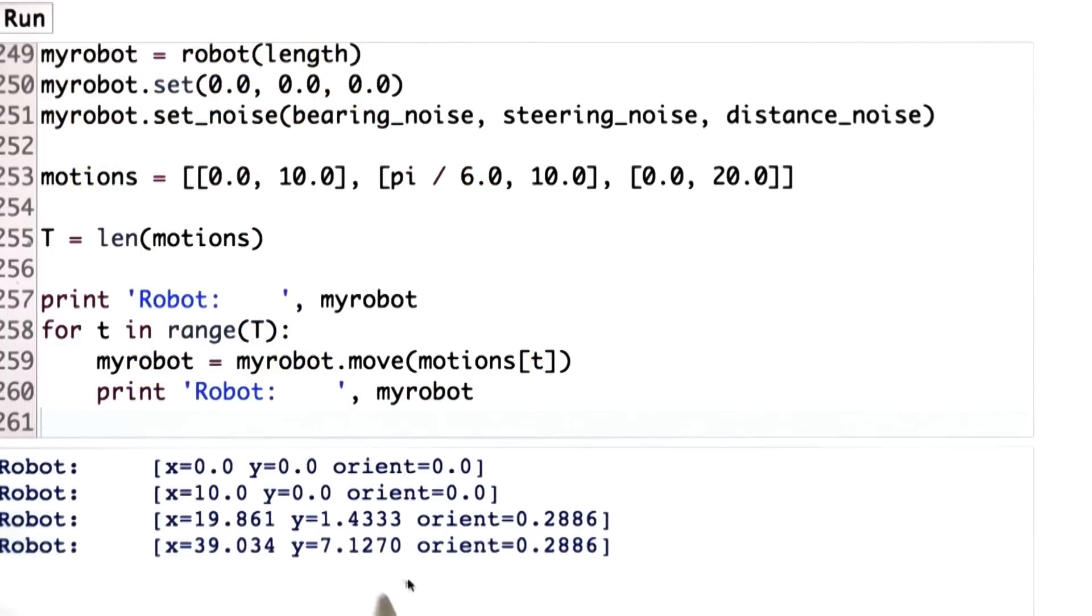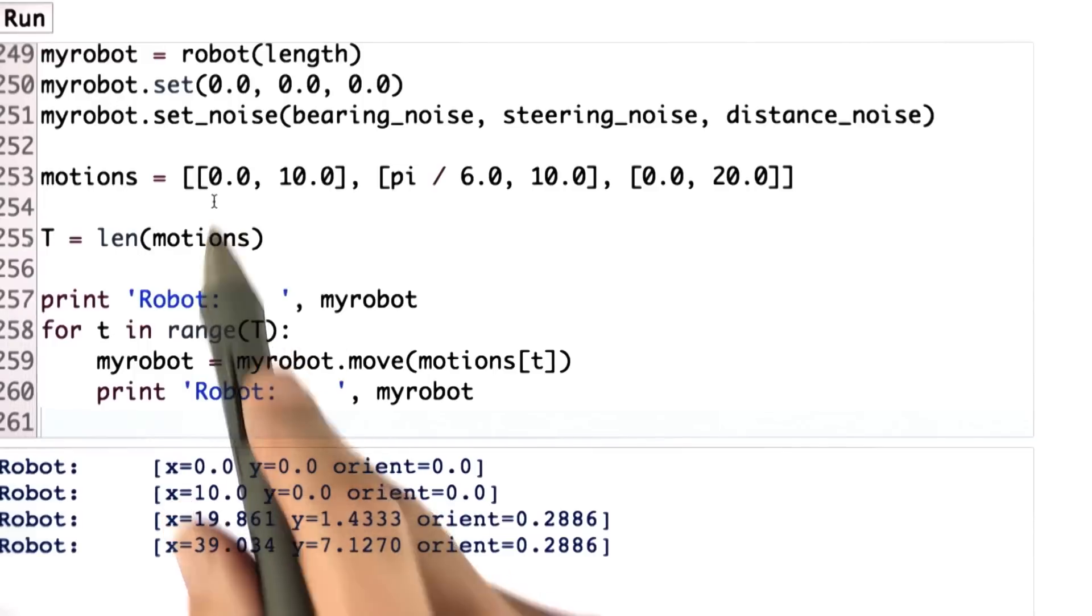So if you get this right, this is the numbers I would like to see. Initially, the robot position is 0, 0, 0. That's just the one over here. It's our first print command. And then moves forward in x direction by 10. Orientation stays 0, so does y, because there's no steering.